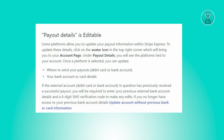To change your payout details, you first have to log in to your Stripe account. Some platforms allow you to update your payout information within Stripe Express. To update these details, click on the avatar icon in the top right corner, which will bring you to your account page. Now under payout details, you will see the platforms tied to your account.